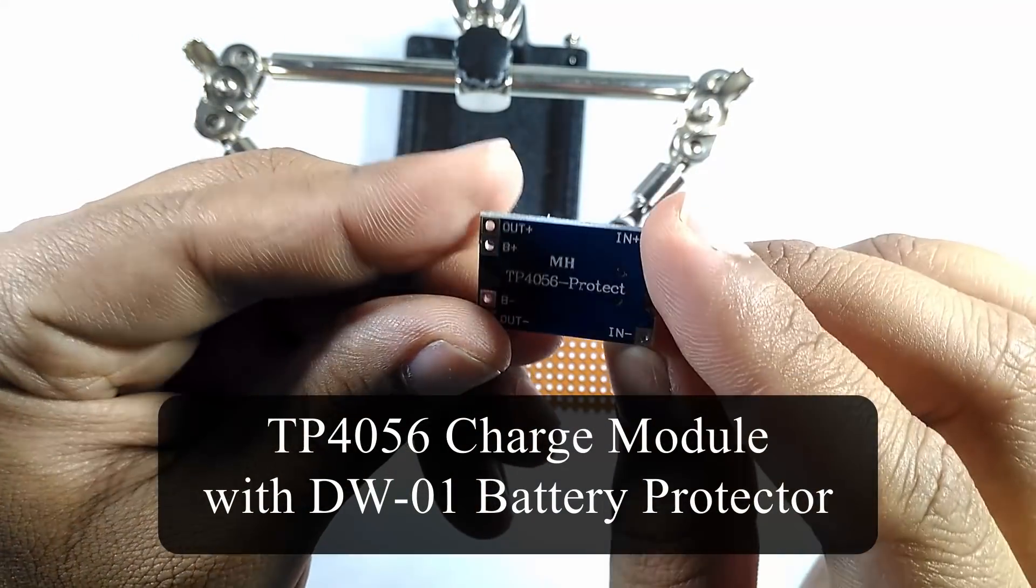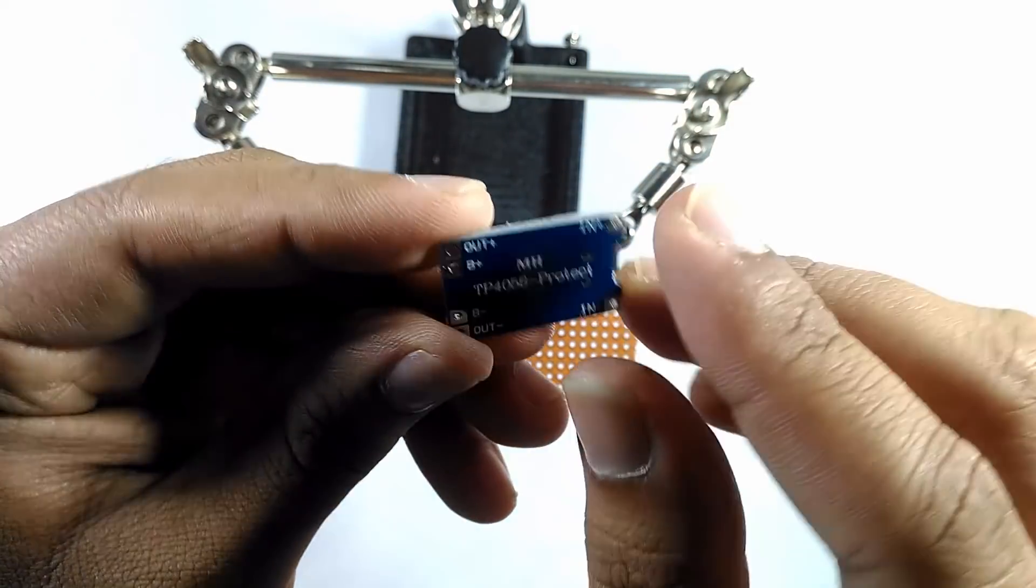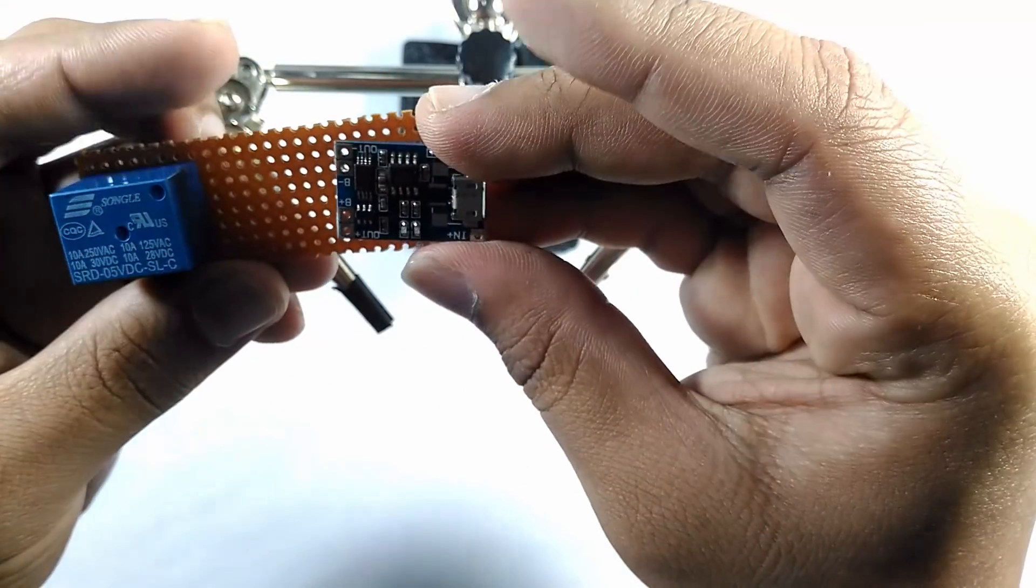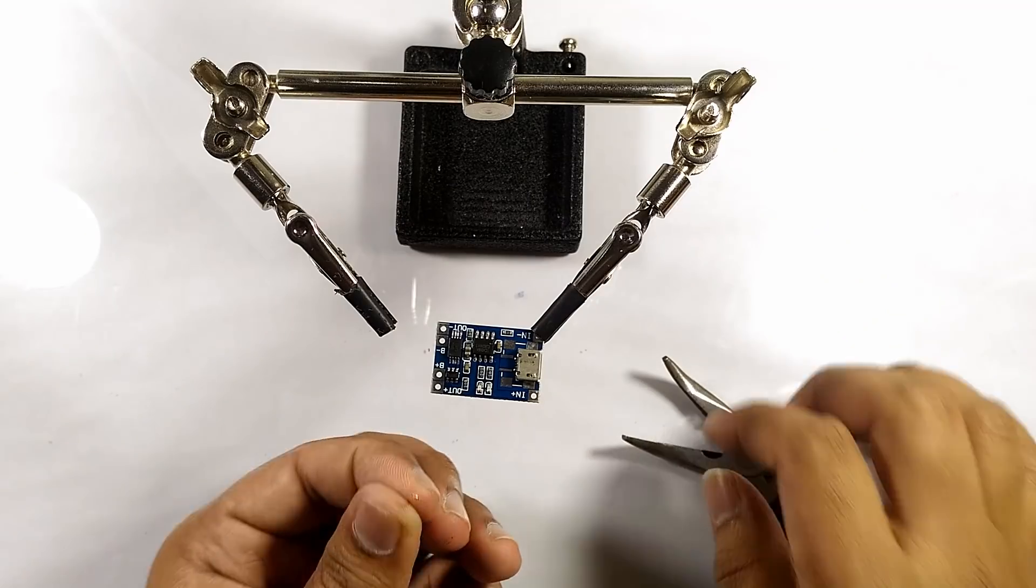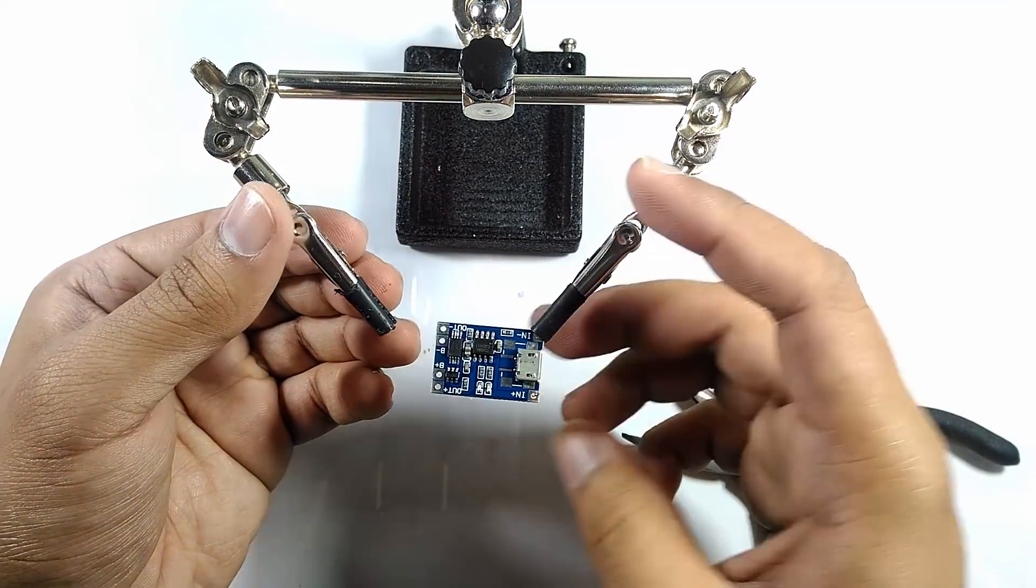We also need a TP4056 battery charge circuit which also has the DW01 battery protector. If you are only able to find the TP4056 without the DW01, you will need to buy a DW01 battery protector circuit so that your battery will not go over discharged.